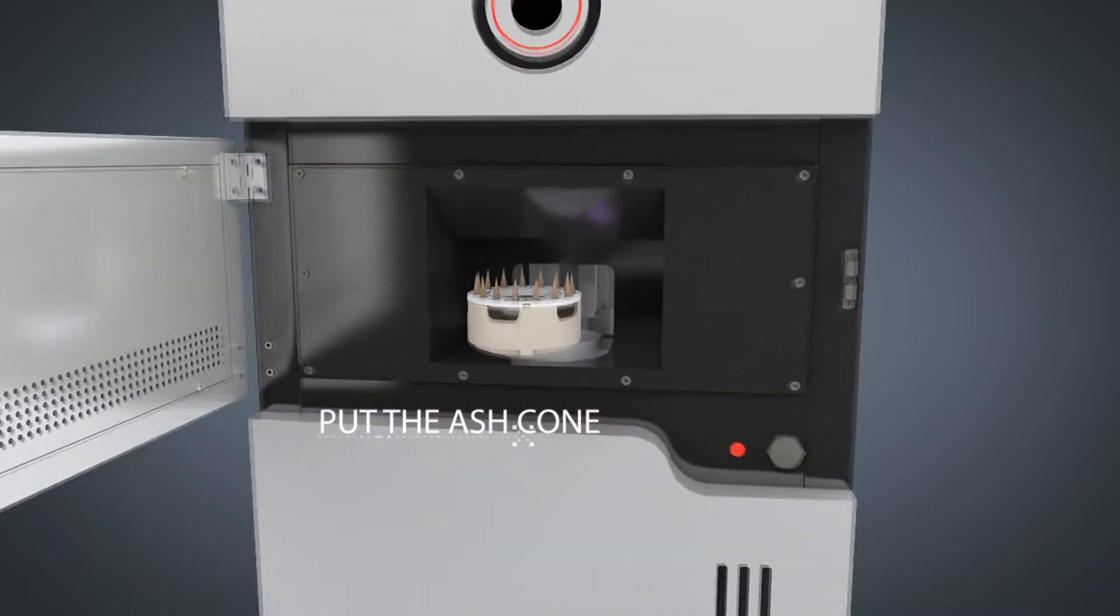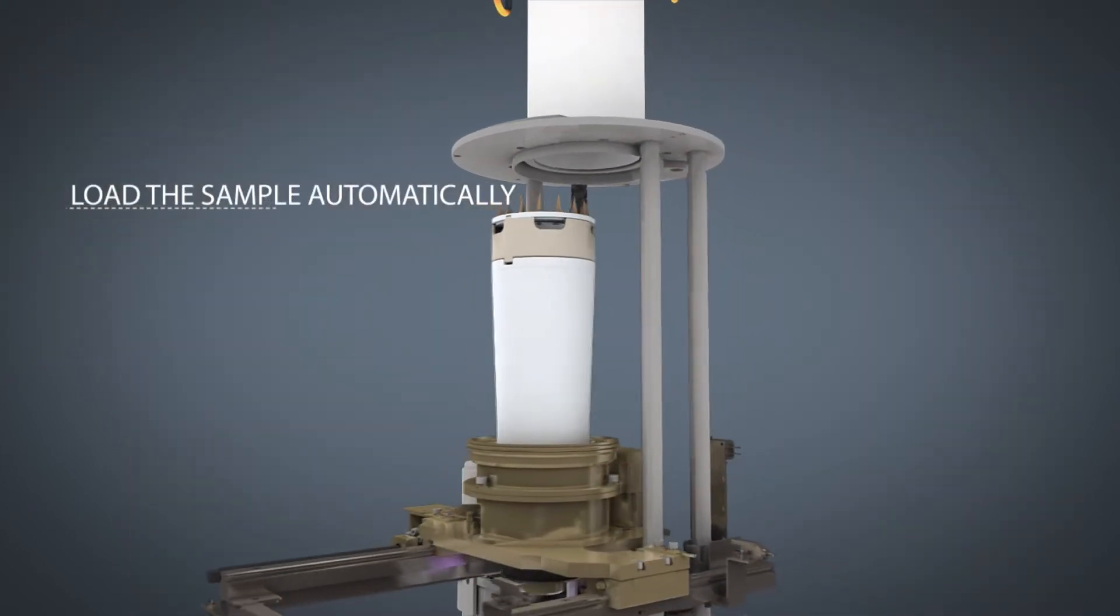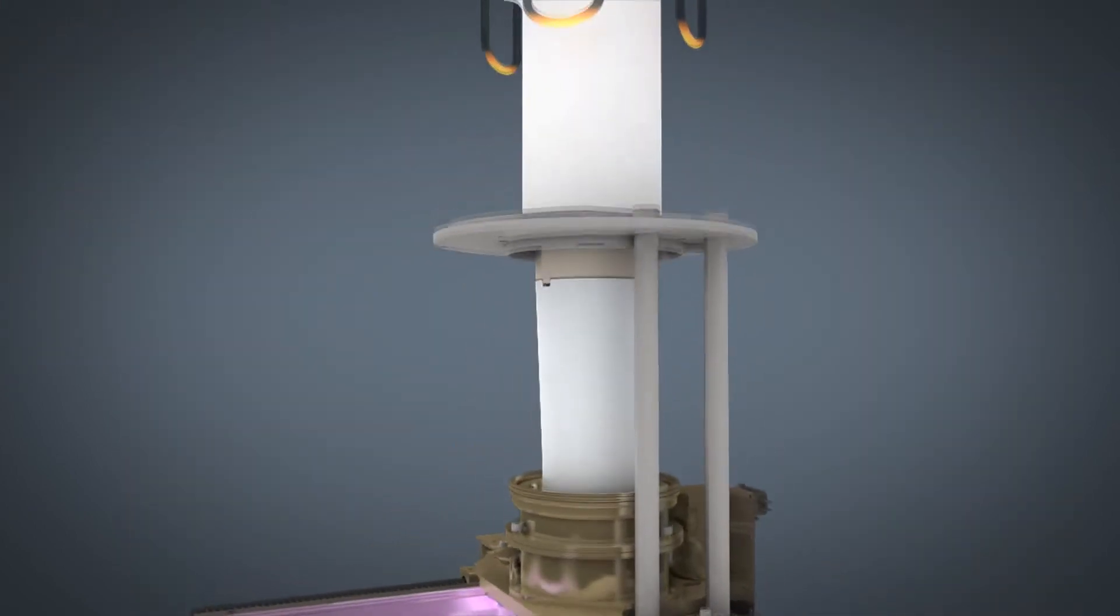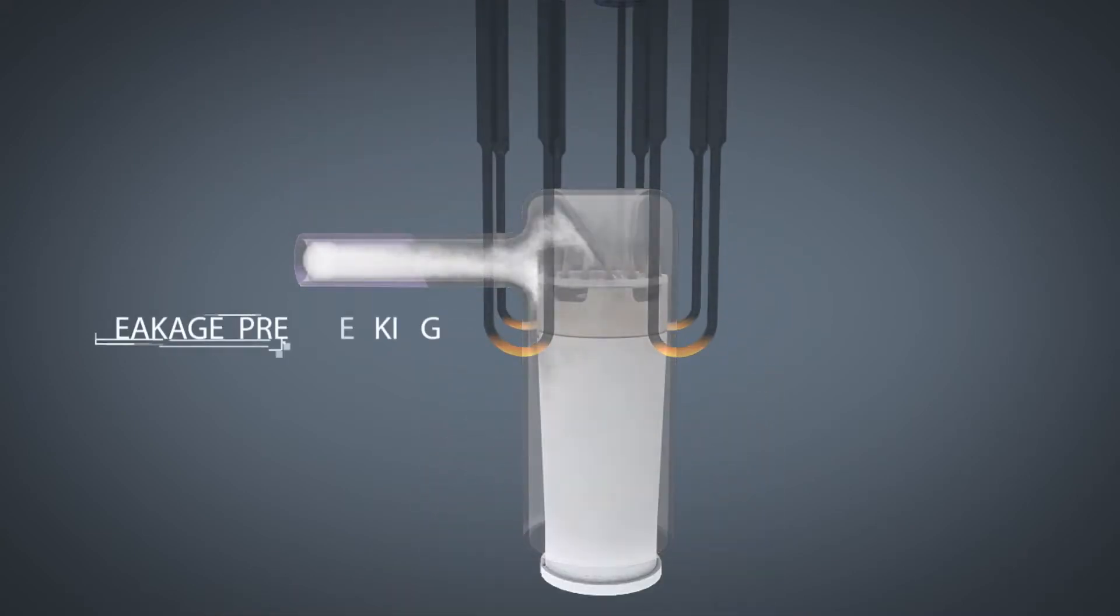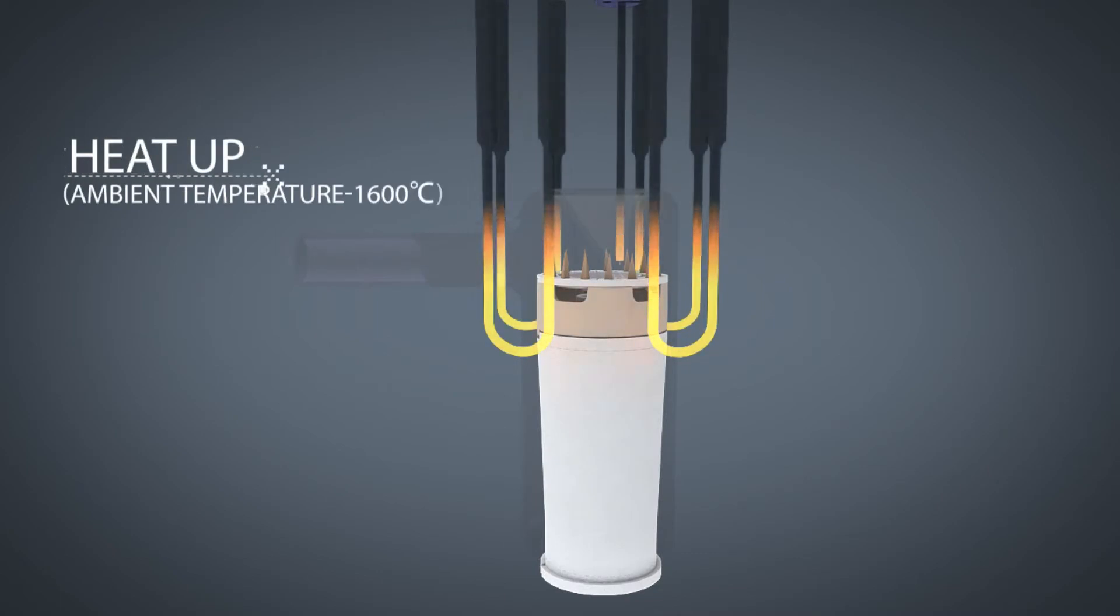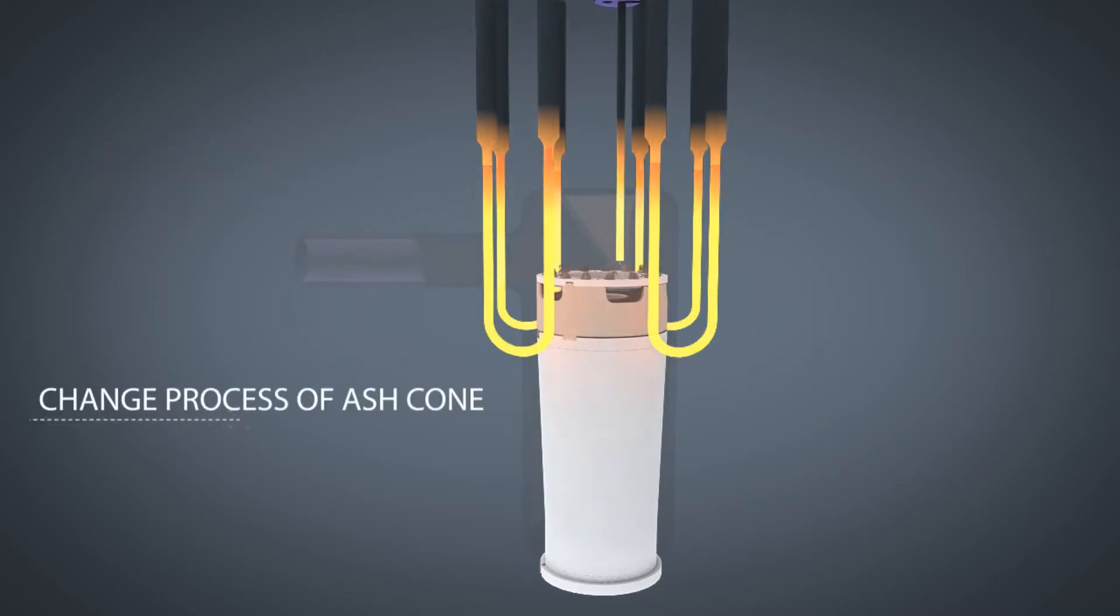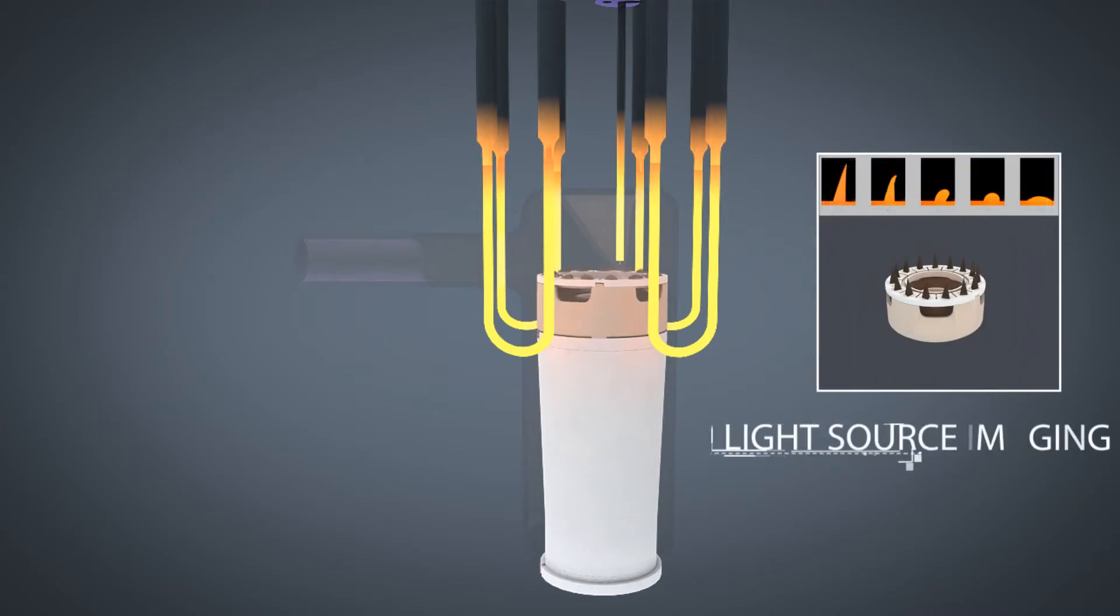Put the ash cone, load the sample automatically, heat up to a temperature of 1600 degrees Celsius. The change process of ash cone is captured through light source imaging.